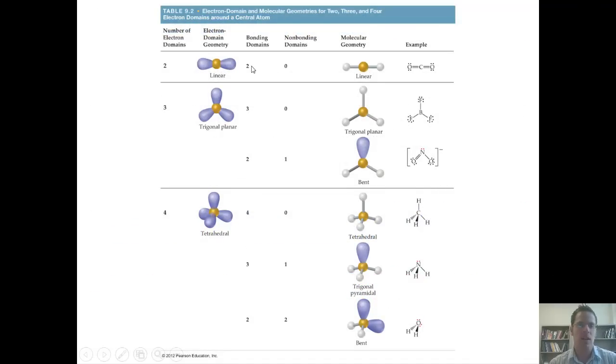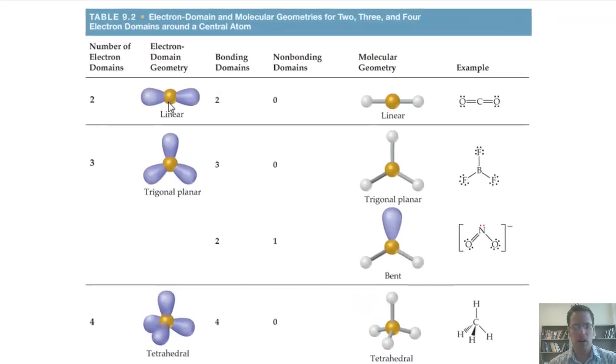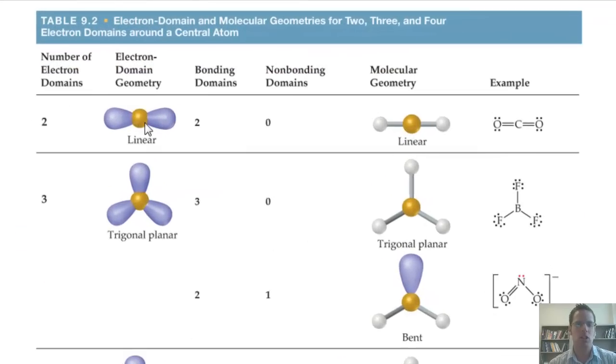Let's take a look then at some examples. If I have a molecule in which I've got a central atom bonded to two different things, and those things are both atoms, so there are no lone pairs on that, I would say that the number of bonding domains in that molecule is two. The number of non-bonding domains or lone pairs in this example is zero. The molecular geometry, of course, is linear, and an example of this is carbon dioxide that we saw earlier.